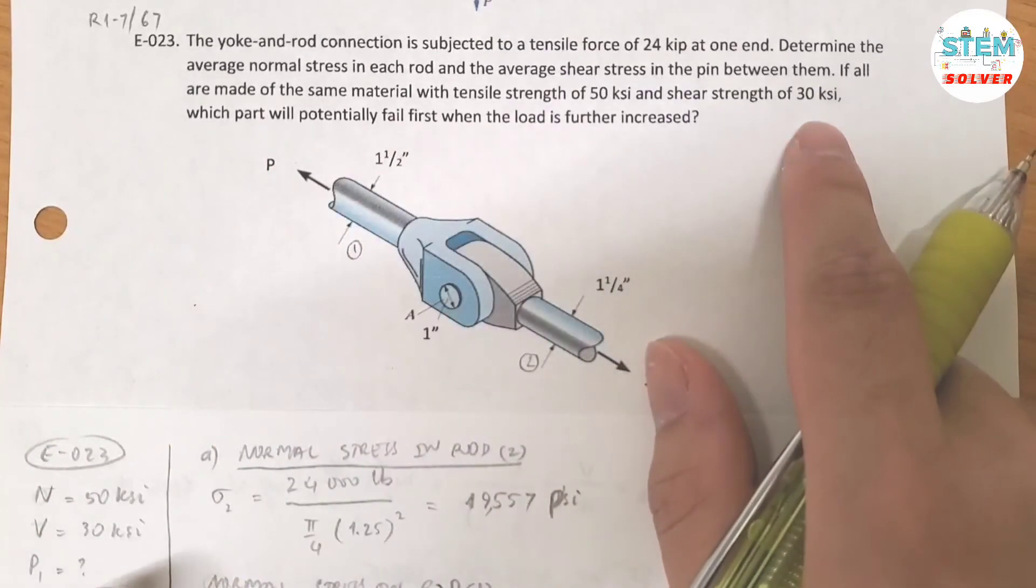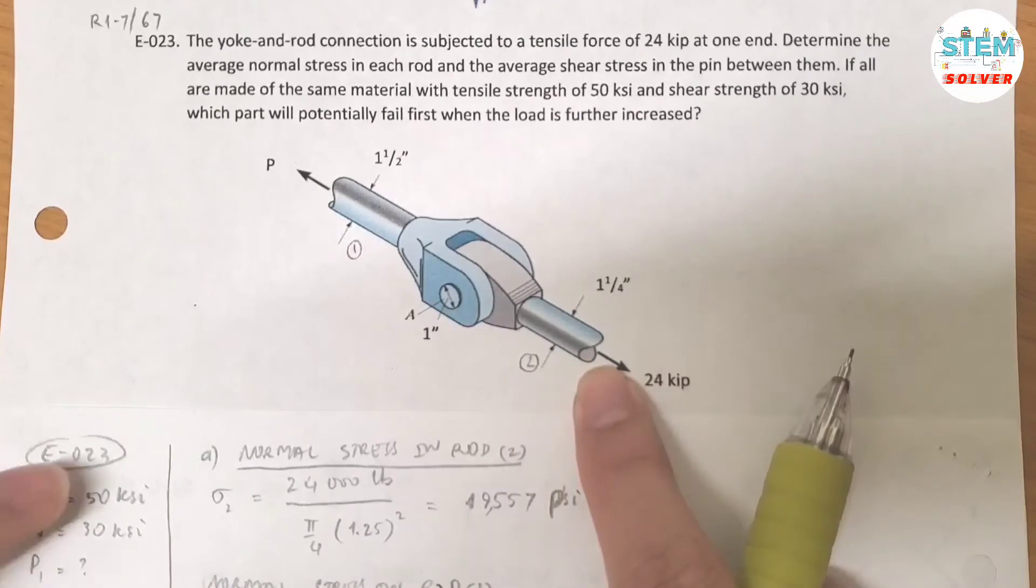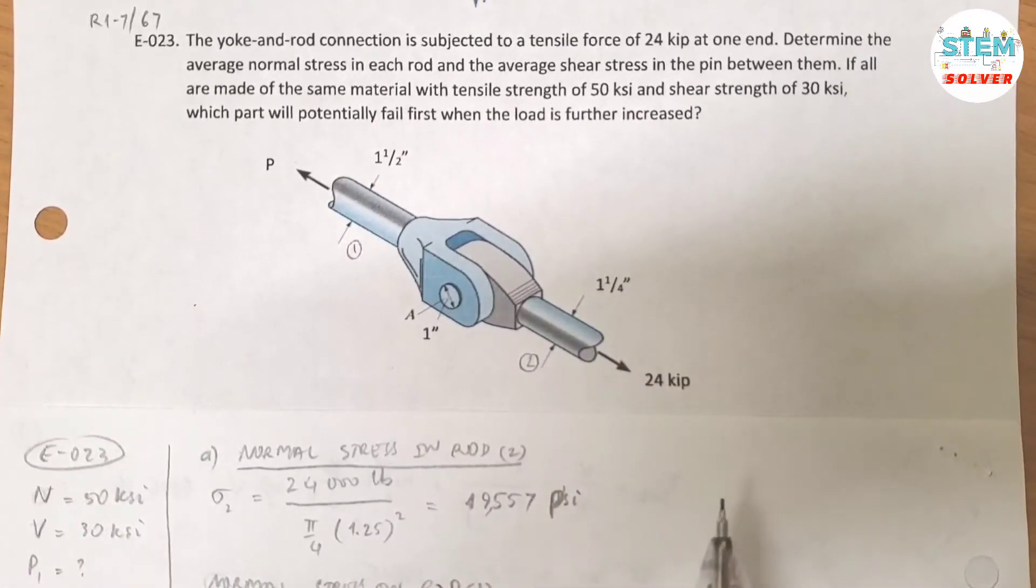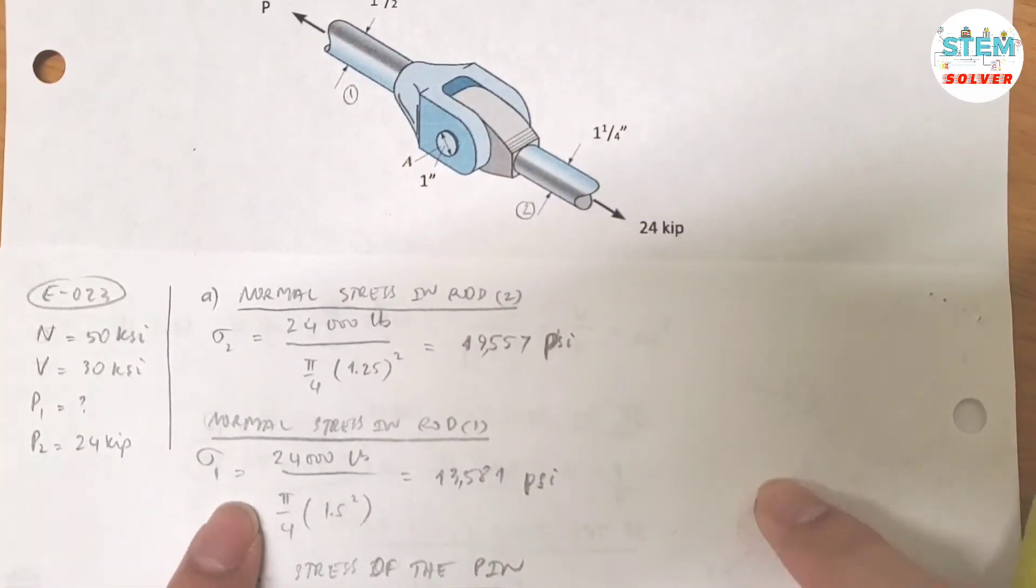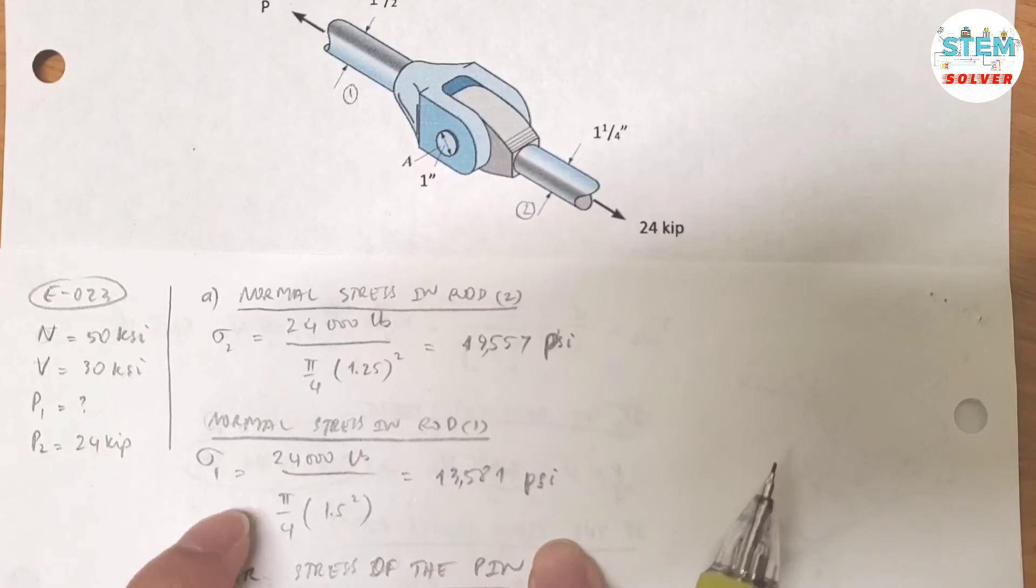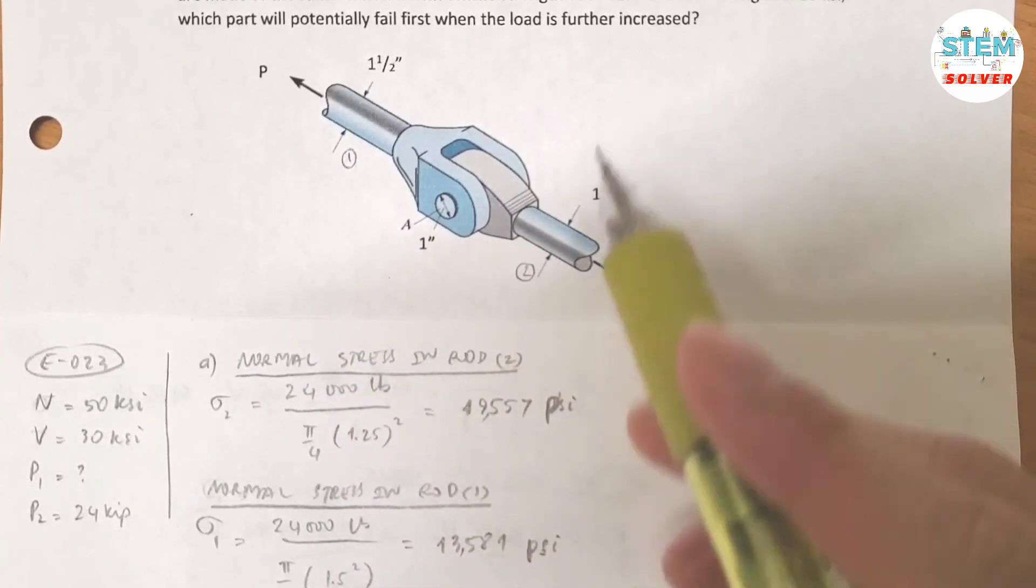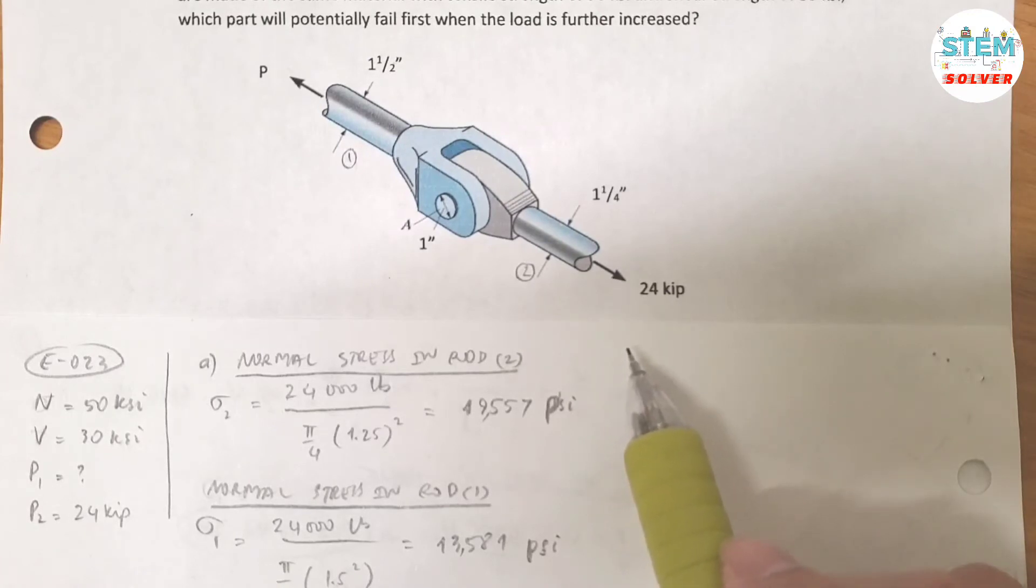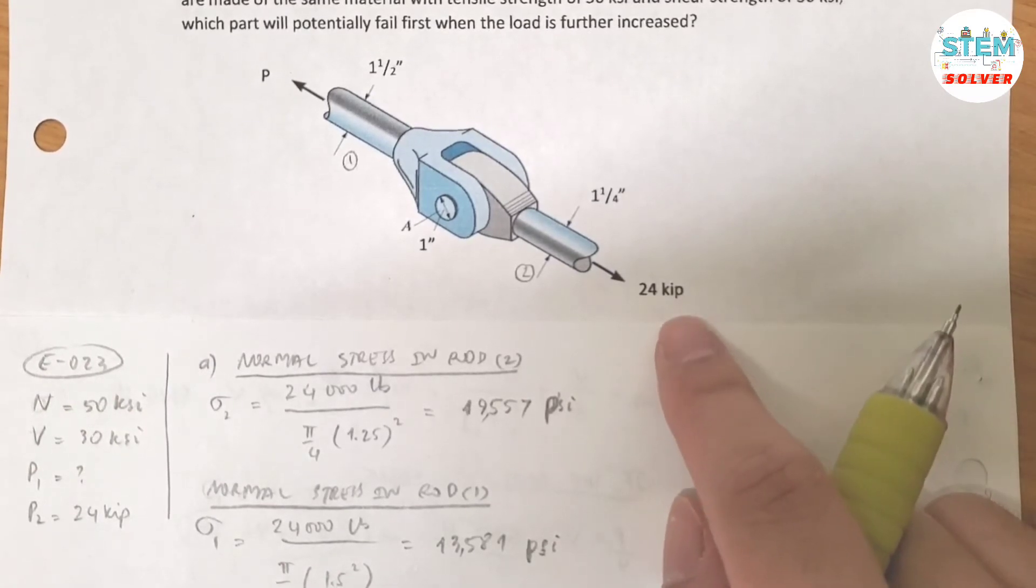Let's see, determine the average normal stress in each rod. Okay, so we're done with this one, now what is the normal stress in rod 1? Let me move this up. So the normal stress in rod 1, same process, same formula: normal stress is equal to normal force divided by the area. Okay, again the force is 24,000. Let me pause right here. Okay, so let's assume P1 is the same as P2 which is 24.